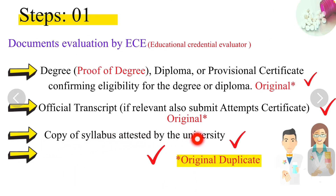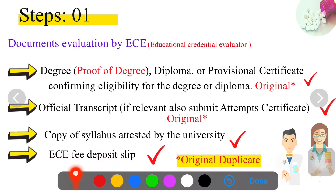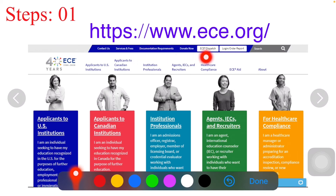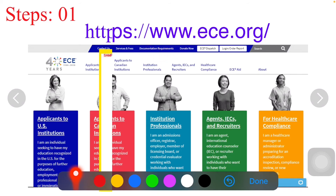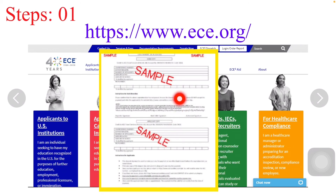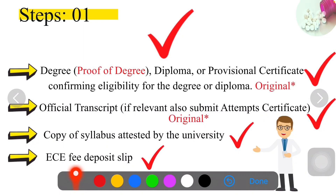The third document is your syllabus — take a copy of the syllabus and get it attested by the university. The fourth document is the ECE fee deposit slip. Visit the website ECE.org, make an account, and upload your personal details as well as details regarding your education. Once you provide your details, pay the fee, and after payment they will give you the option to download your fee slip, which you can then print.